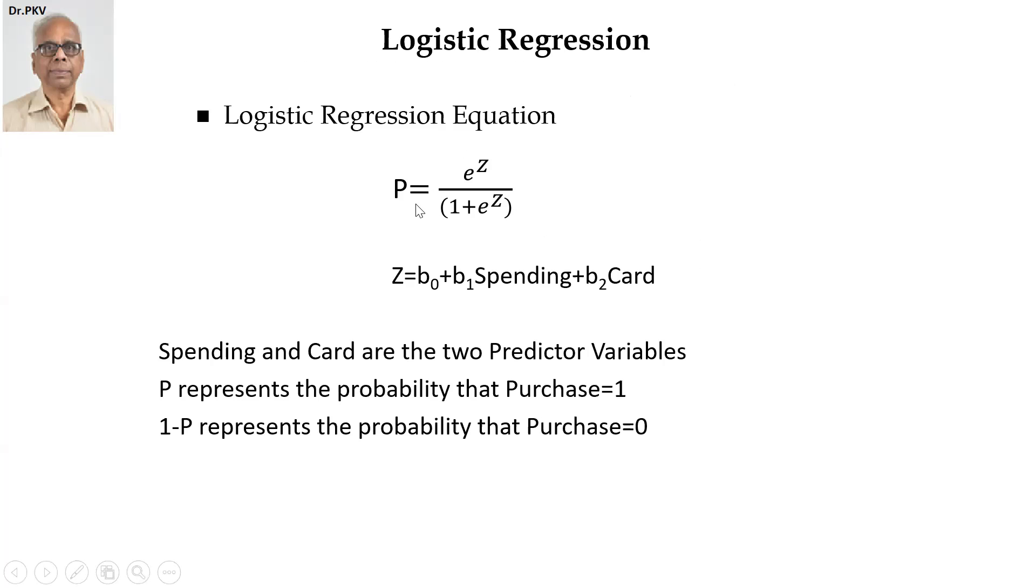And z is the regression here, which is b0 plus b1 times spending plus b2 times card. Instead of x1 and x2, I use the names directly, spending and card. b0 is the intercept. b1 and b2 are the slopes corresponding to the two predictor variables spending and card. P represents the probability that purchase equals one. One minus P represents the probability that purchase equals zero.